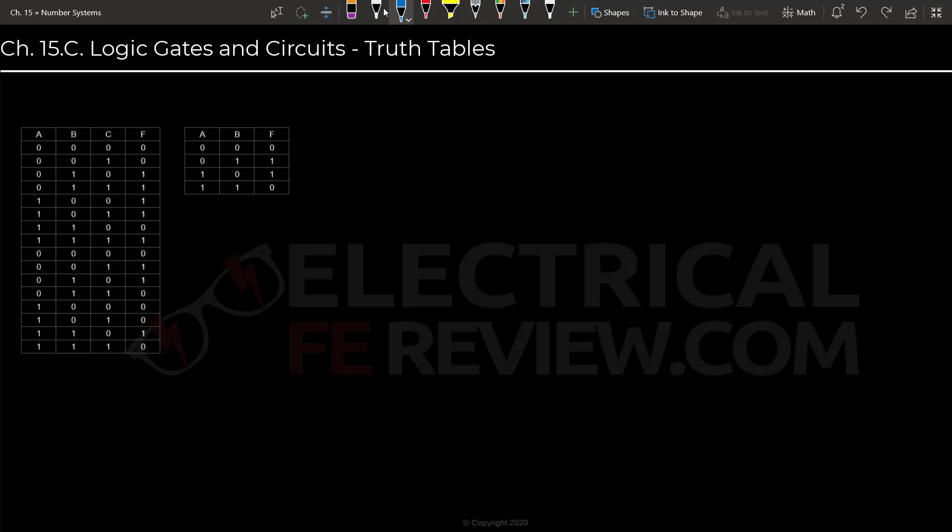The first thing to note is that we will start by labeling the inputs A, B, and C, and then we're going to count in binary. A shortcut for this is that the last place will always change after each row. So this will be 0, 1, 0, 1, 0, 1, and so on.